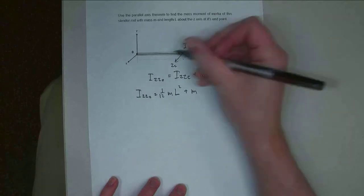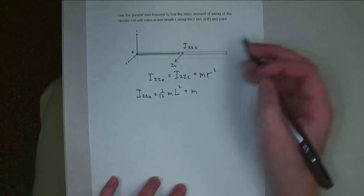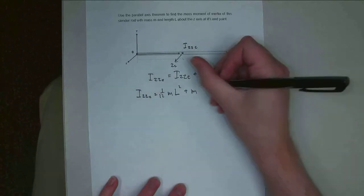And we also need to add in plus m and our distance r here. If it's the center of this rod, it's going to be 1/2 of the length. It's the distance between this z-axis and this z-axis here.